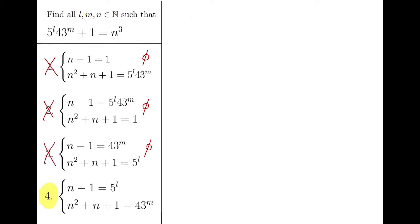So, the only possible solution we can find is from case 4. That is that N minus 1 is the power of 5, and then N squared plus N plus 1 is the power of 43. Before we move on, let's try to predict what we can get at the very end. We know there is an obvious solution which is that L equals 1 and M equals 1. So, left hand side will be 5 times 43 plus 1 which is 216 which is 6 cubed. So, N is 6. This is one solution. After finding this solution, a very natural question comes up. What happens when L or M is at least 2?